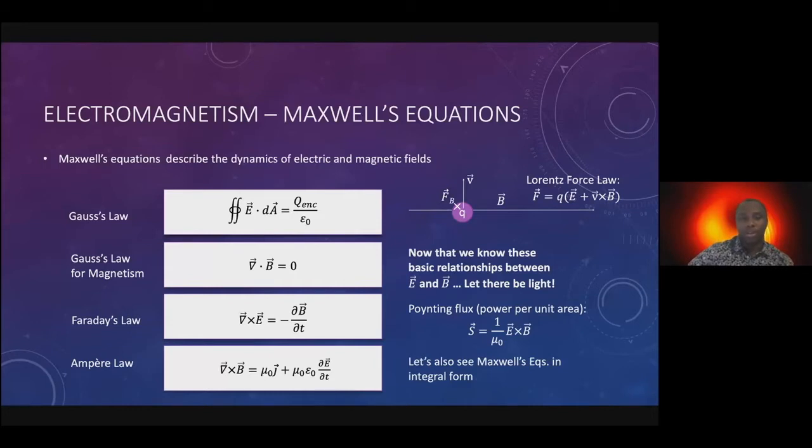Along with Maxwell's equations, we have a handle on the relationships between electric and magnetic fields. Let there be light. I'm talking about a Poynting flux. Imagine electric and magnetic fields propagating orthogonal to each other and transversely. We can also recast these in integral form. We can think of the diverging electric fields as being integrated over surfaces. What comes through the surface is basically what charges were inside.